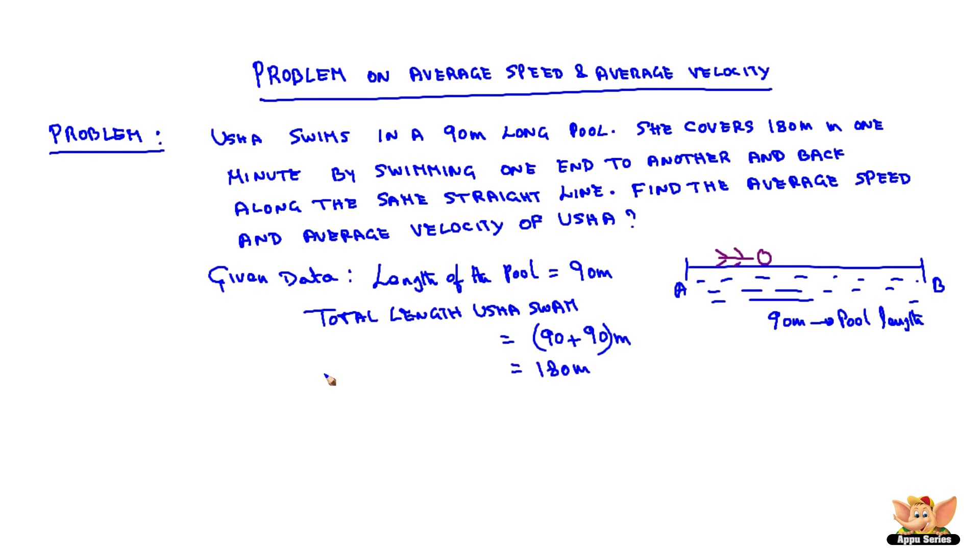The time taken is 1 minute, which is 60 seconds. So in this case, the average speed of Usha is 180 meters, the total distance, divided by 60 seconds, which is 3 meters per second.